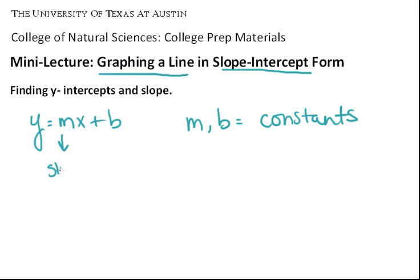m corresponds to the slope of the line, and b is the y-intercept.